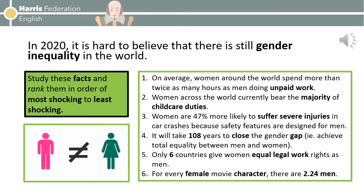Fact 2: women across the world currently bear the majority of childcare duties. Fact 3: women are 47% more likely to suffer severe injuries in car crashes because safety features are designed for men. Fact 4: it will take 108 years to close the gender gap, i.e. to achieve total equality between men and women. Fact 5: only 6 countries give women equal legal work rights as men. Fact 6: for every female movie character there are 2.24 men.